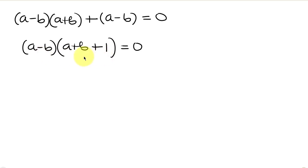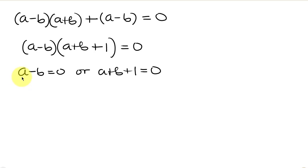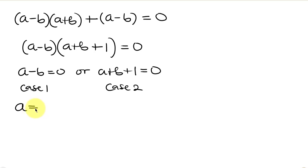We have two factors that multiply to give 0, so it is either a minus b equals 0 (Case 1) or a plus b plus 1 equals 0 (Case 2). For Case 1, moving negative b to the right gives a equals b. But the given condition says a is not equal to b, so we reject this solution.